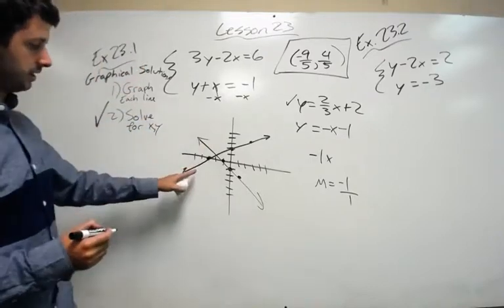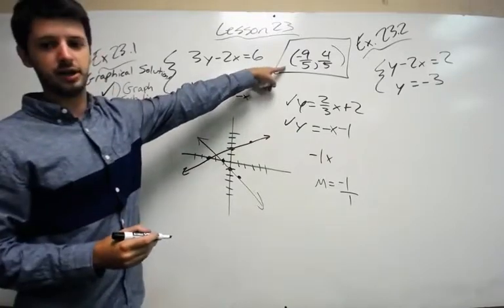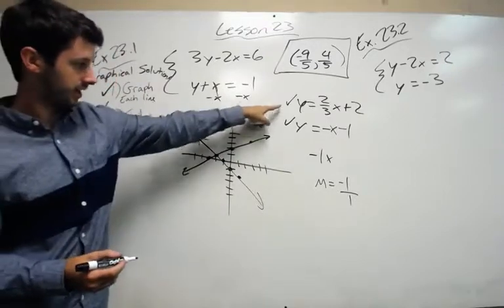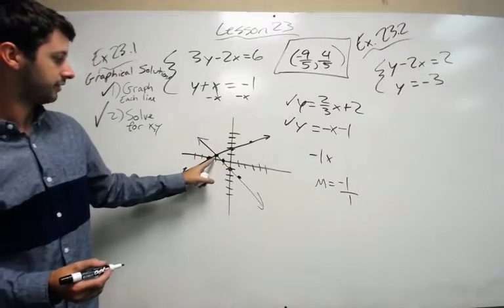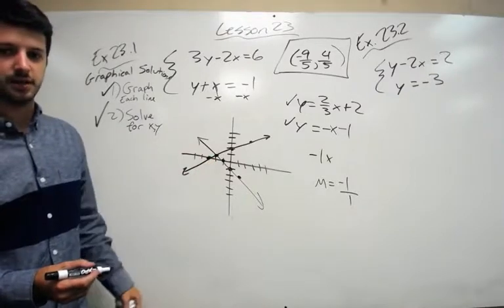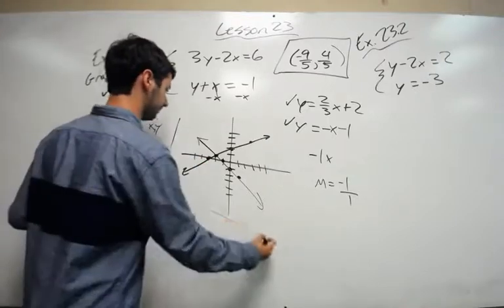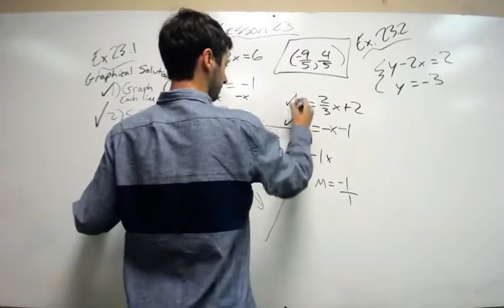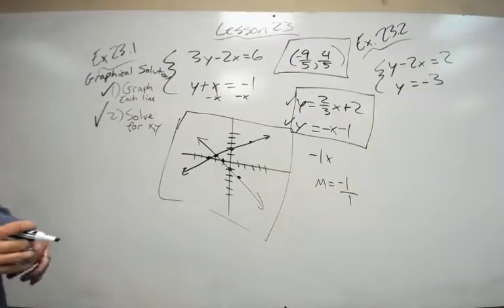So we graphed both lines. And just so you know, this solution right here, this is actually where these points cross. So we graphed this line, graphed that line, negative 9 fifths and 4 fifths is roughly where they cross. So that's what that means. But your answer would be the graph, the intersection, and the equations of the line. So it's a lot in your answer, but that is how you do graphical solutions.